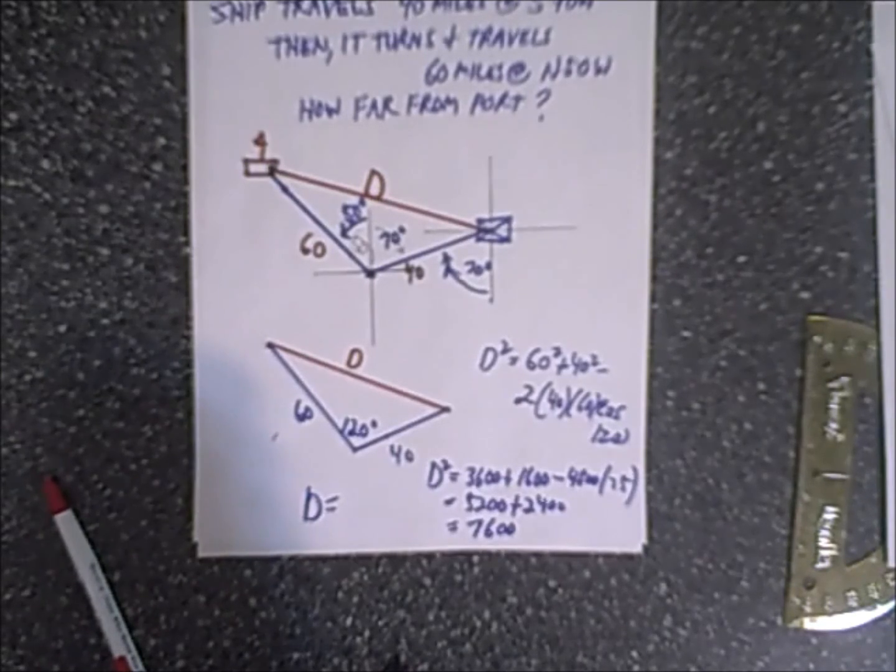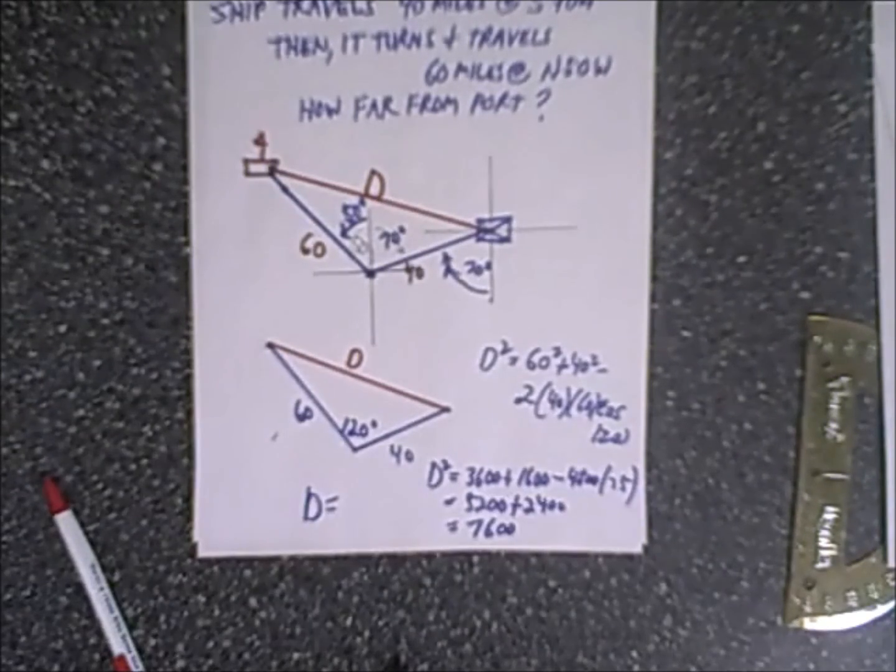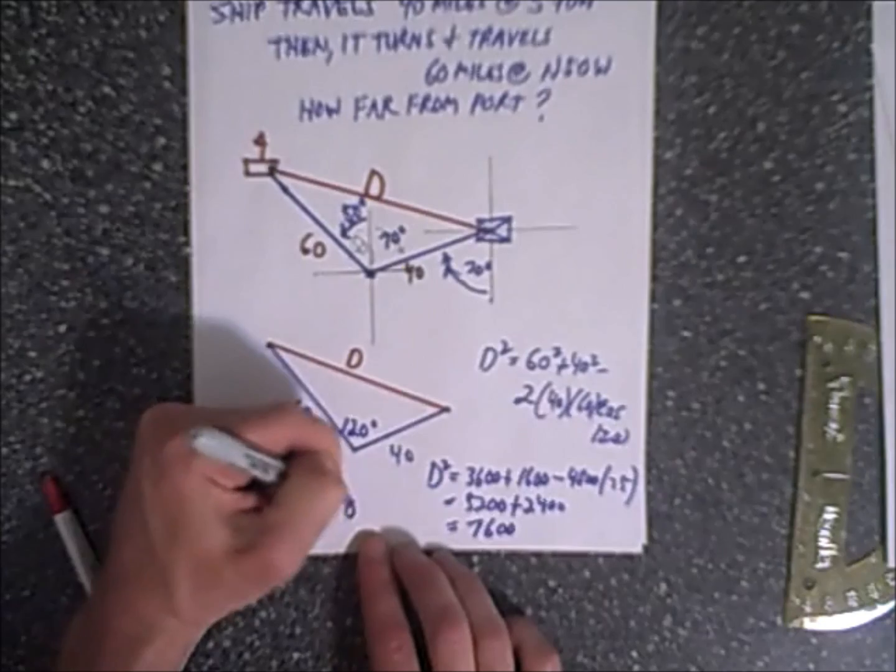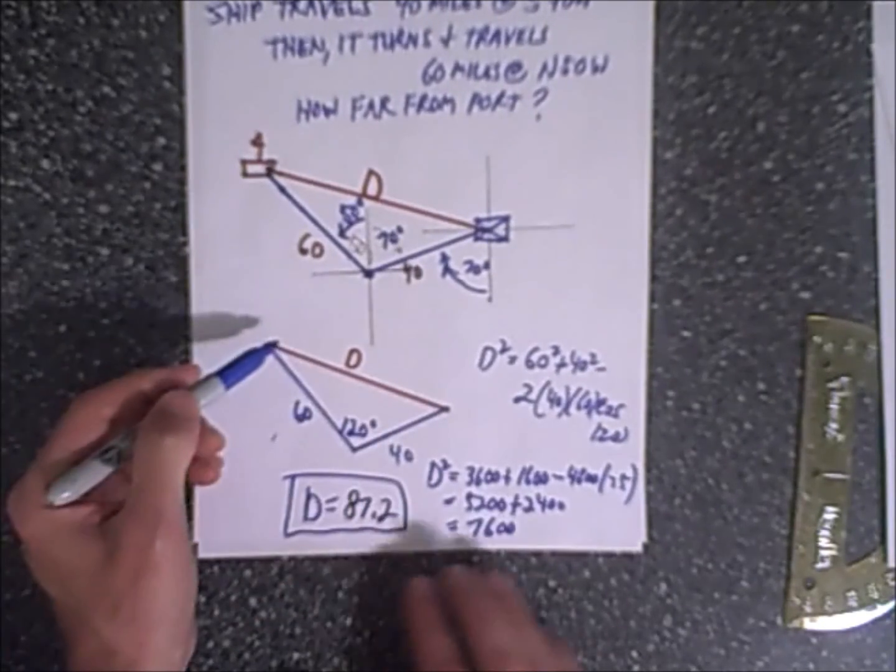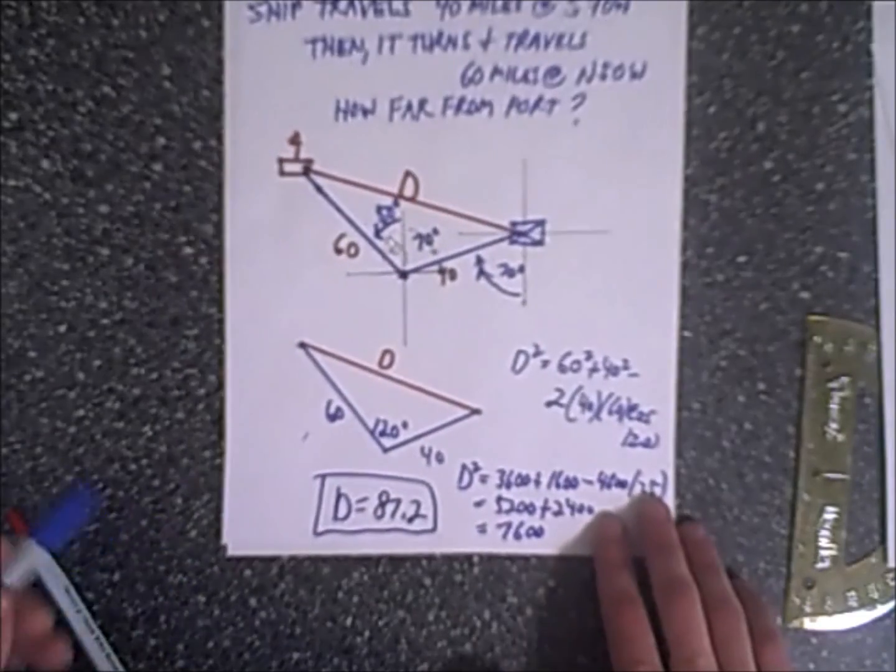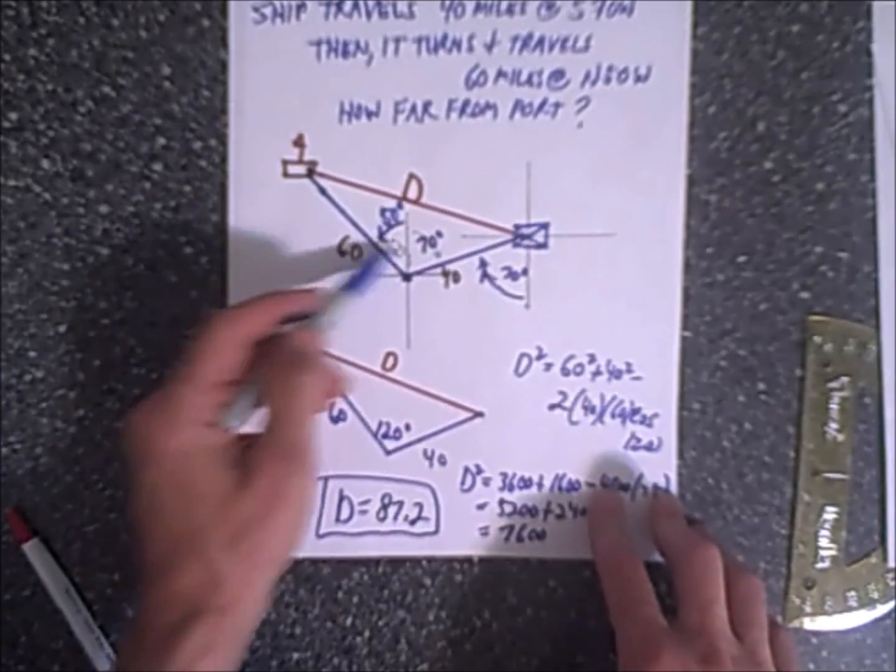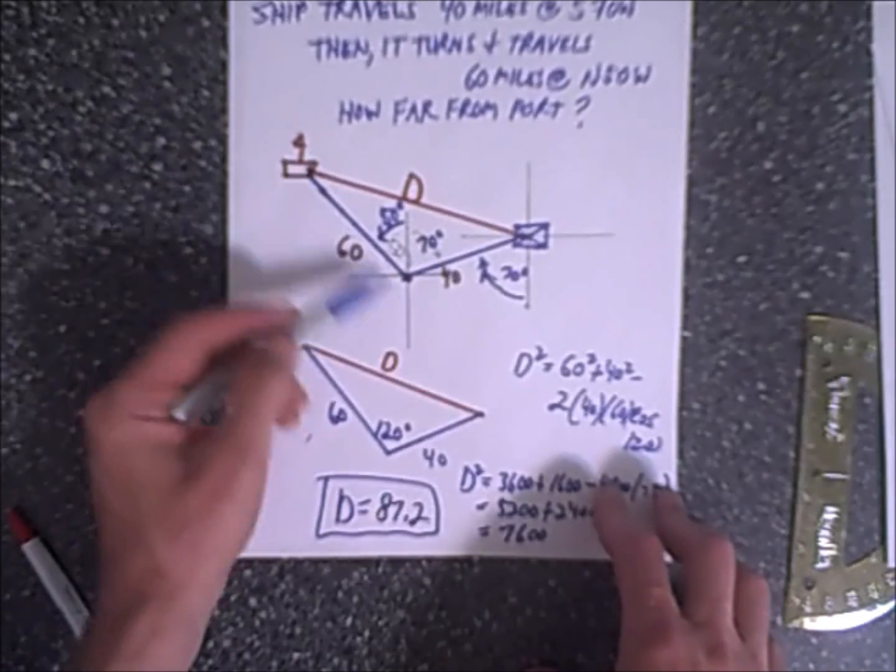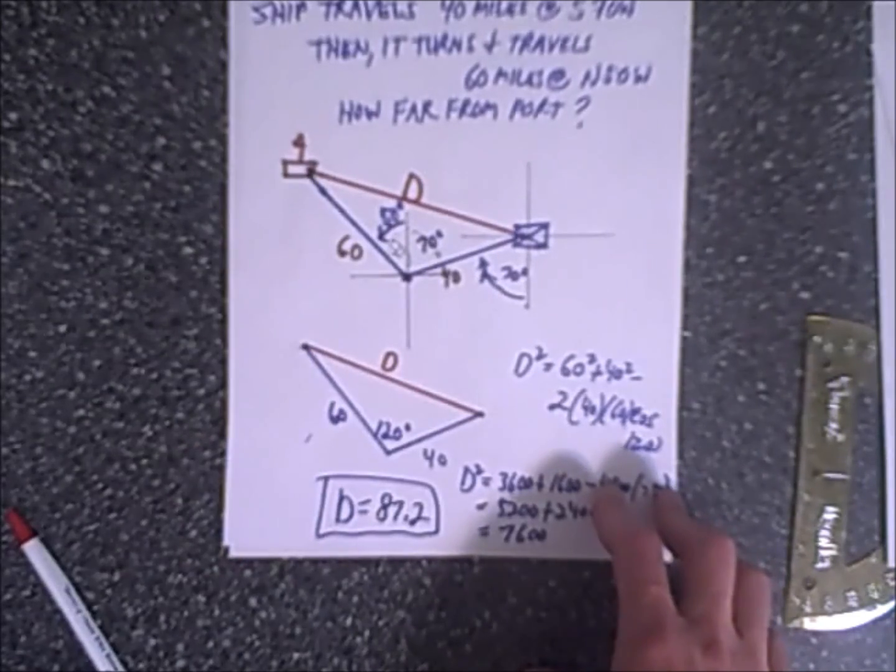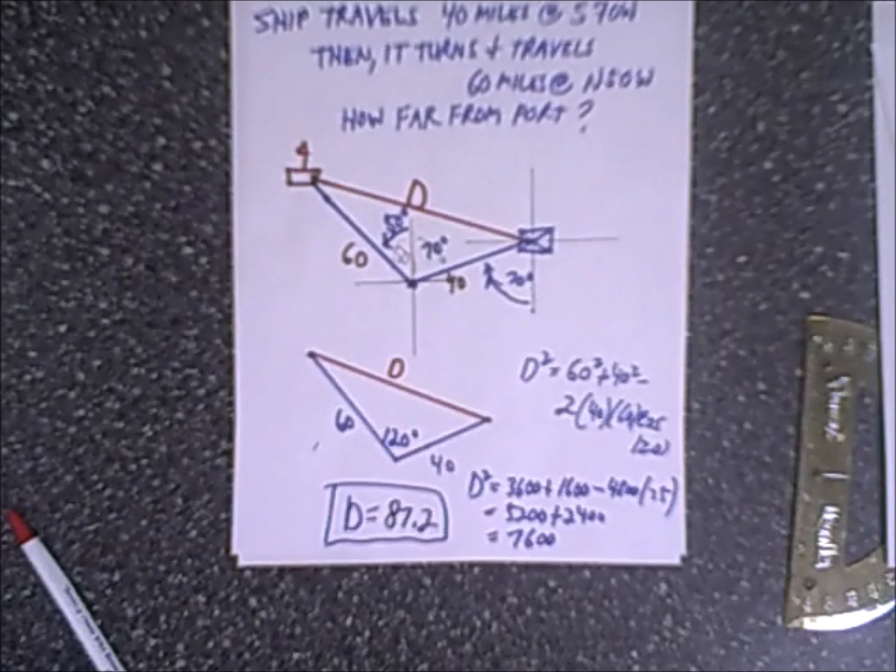And that is the distance that the ship is from the port. And again it makes sense because if it was going straight west, straight west would be 100, but because the angles are in, it's going to be less than 100, and therefore it's 87.2 and that's our solution.